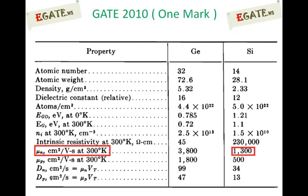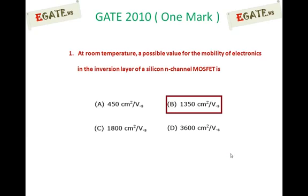Simply, few properties of germanium and silicon. This is indicating μn is mobility of electrons. Units are centimeter square per volt second at room temperature. It is 3800 for germanium, whereas 1300 for silicon. So 1300 is nothing but silicon mobility, electron mobility in silicon. The right answer for this one is 1350, which is nearest answer.